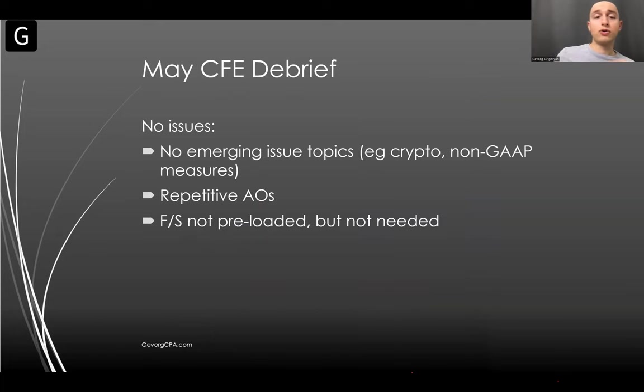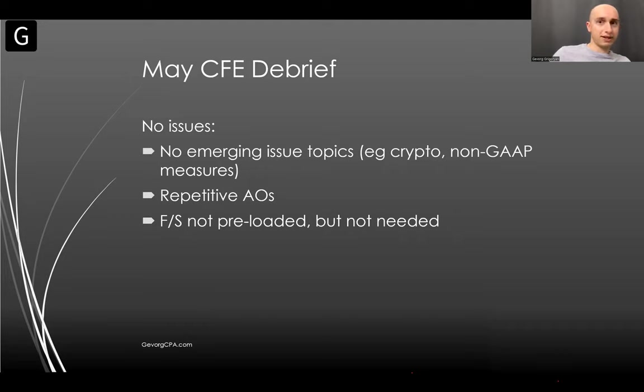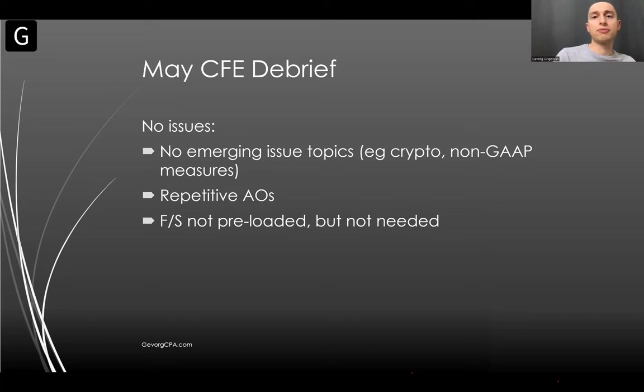There were no IT problems and the hotels were just fine. As far as the content of the exam, there were no emerging issue topics — things like cryptocurrencies or non-GAAP measures related to the pandemic. The board of examiners likes to put those questions every now and then, but they didn't for May 2022. All the issues were pretty straightforward with not a lot of complications. There were a lot of repetitive AOs.